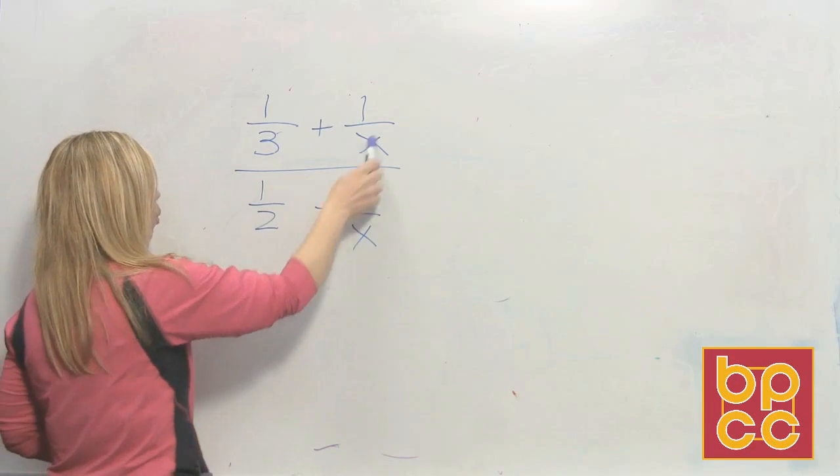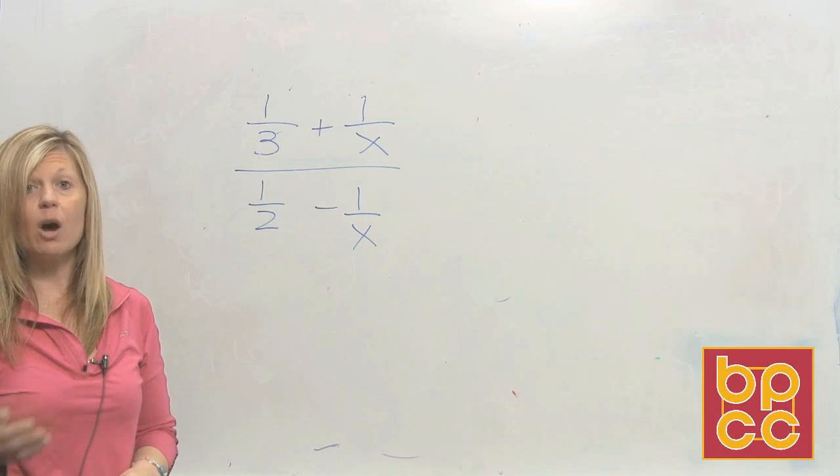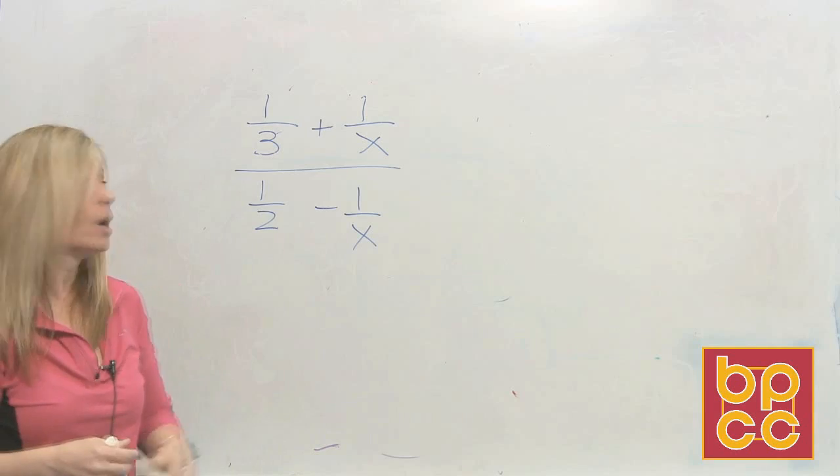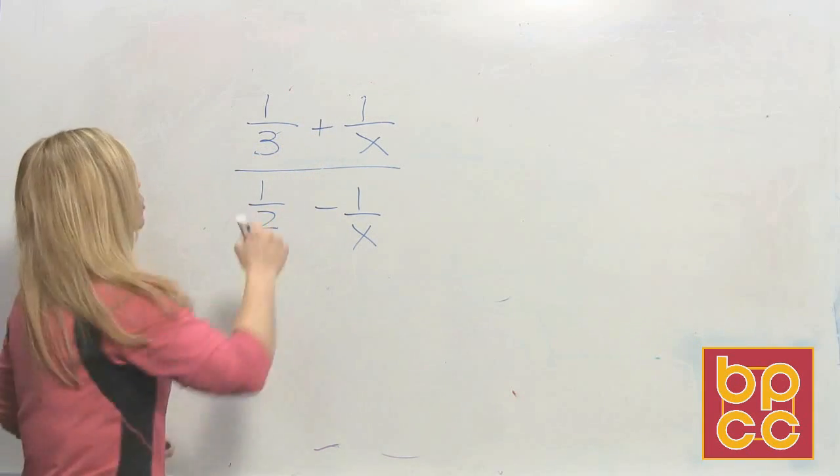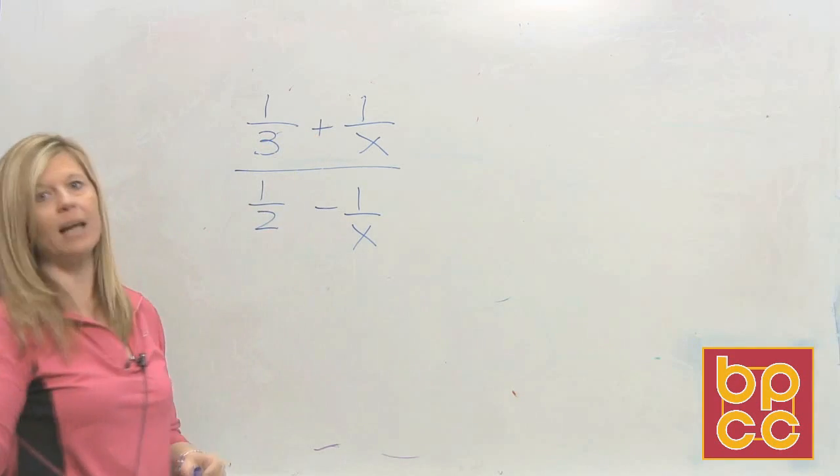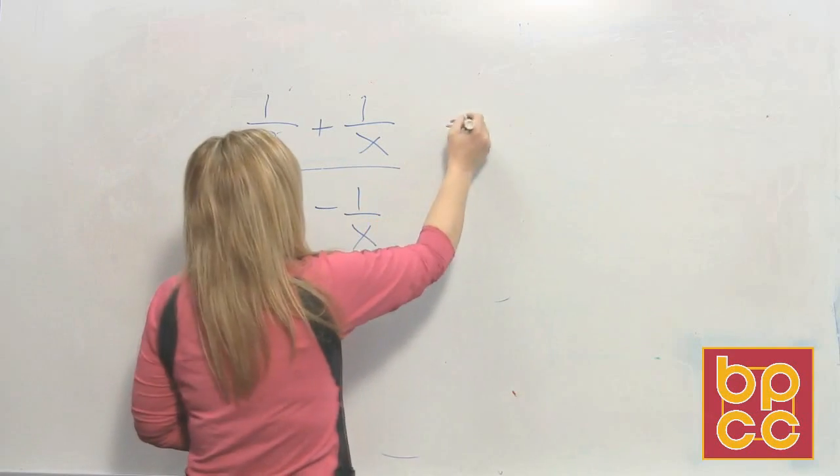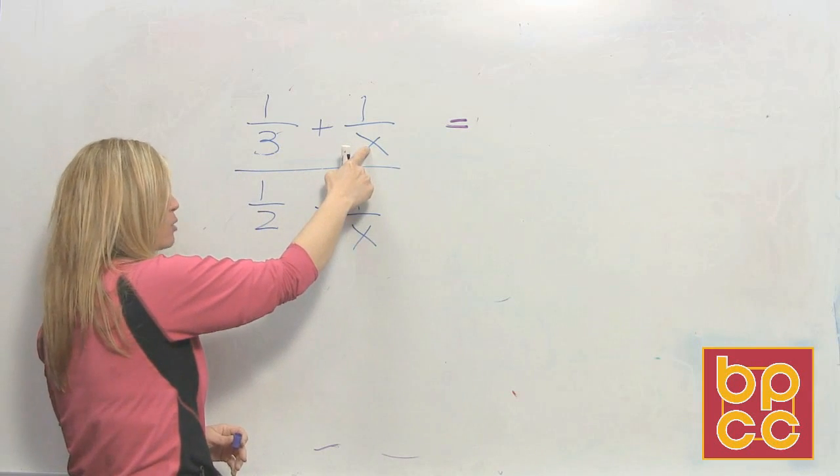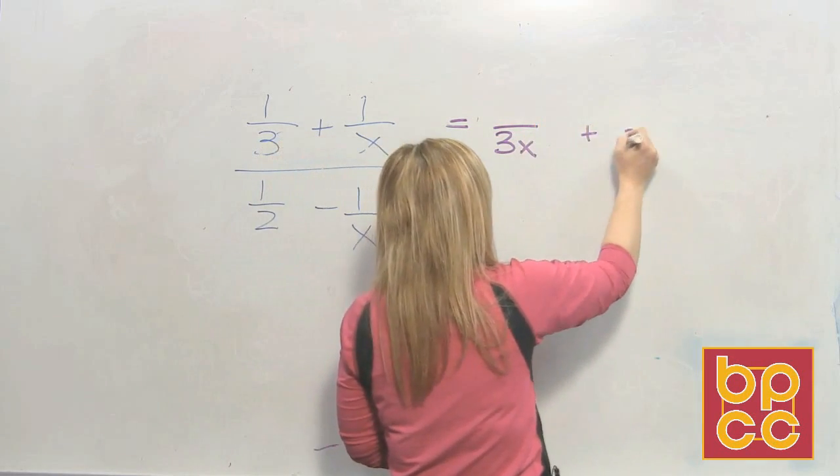The problem is you can't divide first. There has to be one term in the numerator and one term in the denominator. So even though we follow the rules of, please excuse my dear Aunt Sally, we learned in fraction world, before you can divide, there's got to be one term up here and one term up here. So we're going to have to add first. Well, wait a minute. To add means things have to be alike. In fraction world, you need to have the same denominator. So what is the LCD of 3 and x? 3 is in lowest terms. x is in lowest terms. So the LCD would be 3 times x, which is 3x.